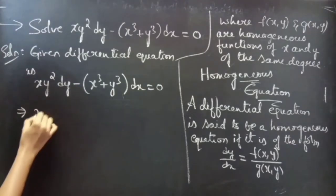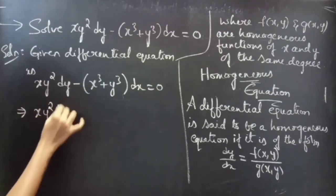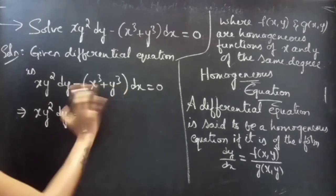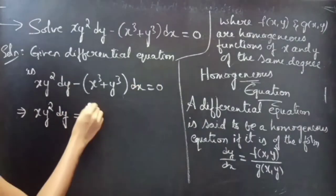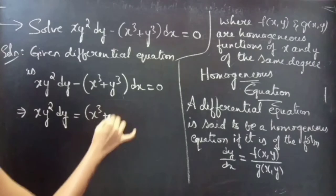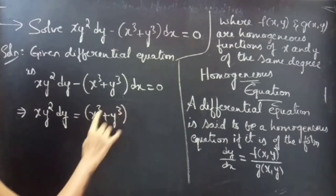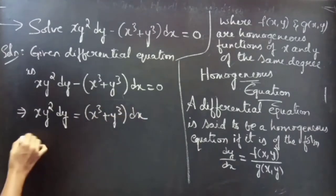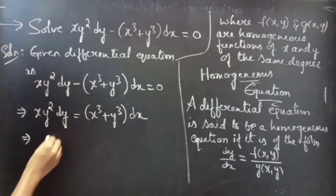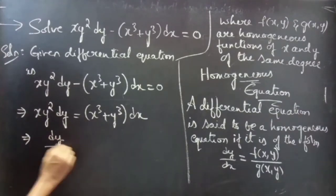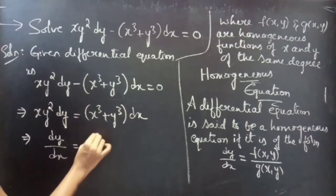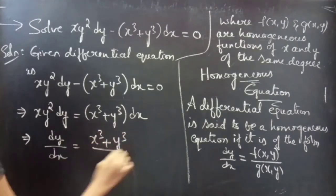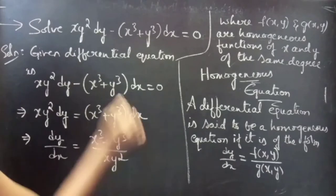We can write it as x y² dy = (x³ + y³) dx. You can then write it as dy/dx = (x³ + y³) / (x y²).